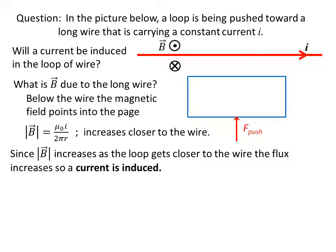Since the magnitude of B is increasing as the loop gets closer to the wire, the flux is increasing, so a current is induced in this loop of wire.